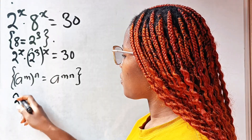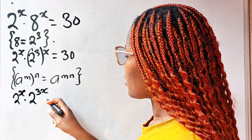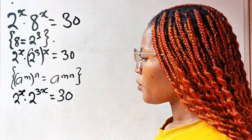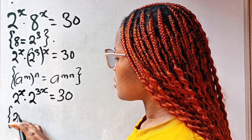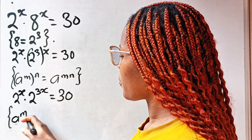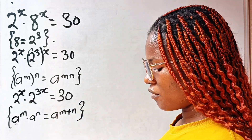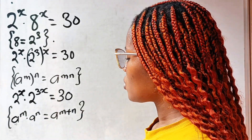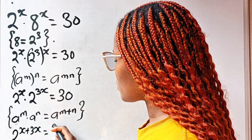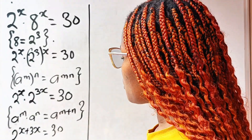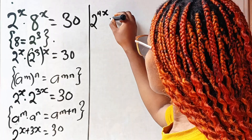So we write 2 to the power of x multiplied by 2 to the power of 3 times x, which gives us 2 to the power of 3 times x equal to 30. Now, using the law of exponents that states that 8 to the power of m multiplied by 8 to the power of n equals 8 to the power of m plus n, we can express this as 2 to the power of x plus 3x, which gives 2 to the power of 4x is equal to 30.